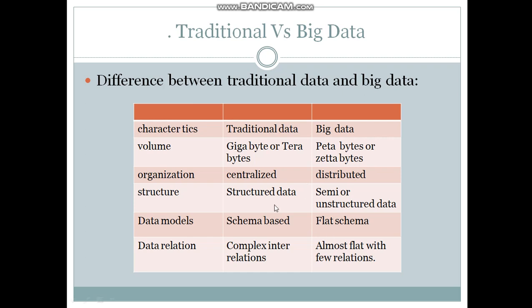Data models: the traditional data model is schema-based and big data is flat schema. Schema is a structure of the database. When we are storing data on the database, it follows some structure and it follows some data types. Big data does not follow any structure for storing the data on the database, so it is called a flat schema.